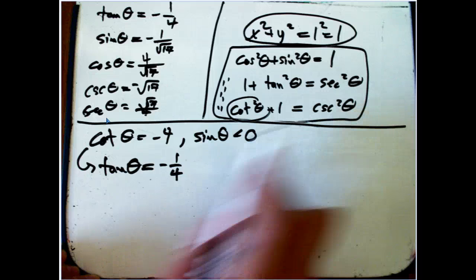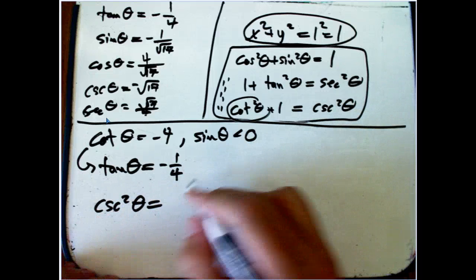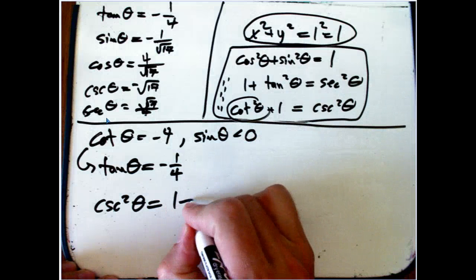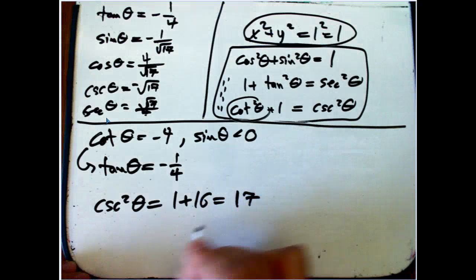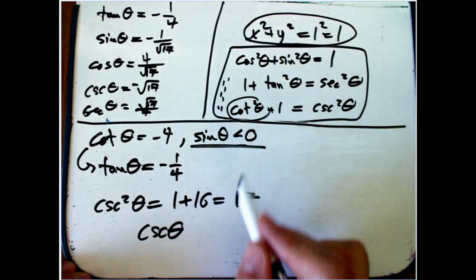Now this one gives us cosecant. Okay. Cosecant squared theta is just 1 plus cotangent squared theta. 1 plus 16 is 17. And then I just square root it. And this comes in to tell me which sign I'm going to have.